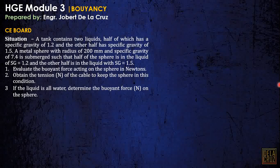A tank contains two liquids, half of which has specific gravity of 1.2 and the other half has specific gravity of 1.5. A metal sphere with radius of 200 mm and specific gravity of 7.4 is submerged such that half of the sphere is in the liquid with specific gravity of 1.2 and the other half is in the liquid with specific gravity of 1.5.